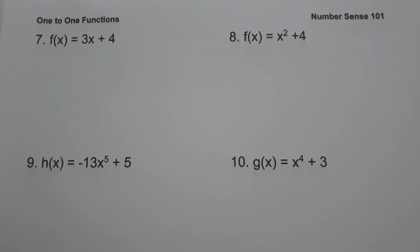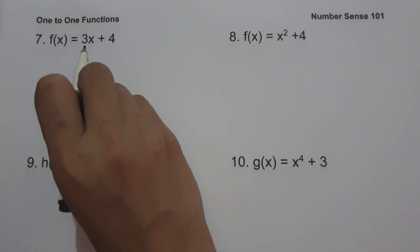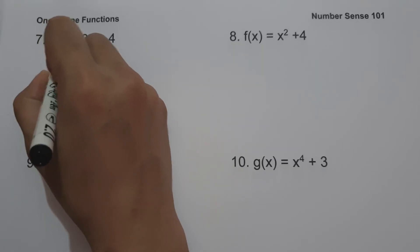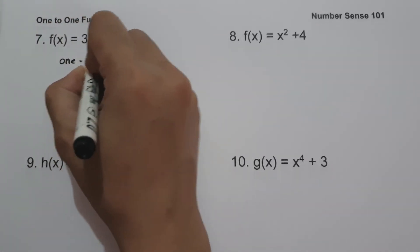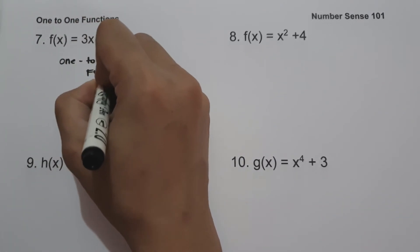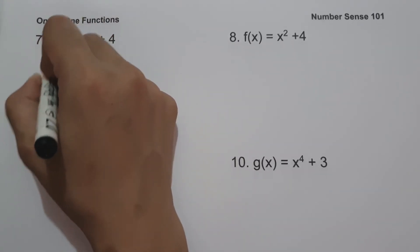On example number seven, we have f(x) = 3x + 4. Always remember: if the highest exponent of the function is an odd number, it is a one-to-one function; if the highest exponent is an even number or an absolute value, the function is not one-to-one. Since the highest exponent here is 1, this function is one-to-one.